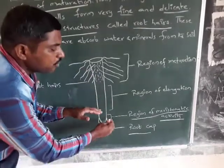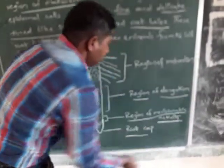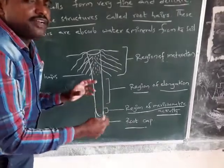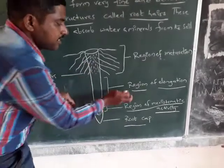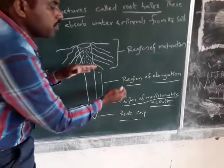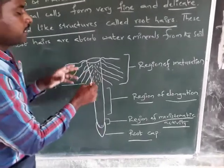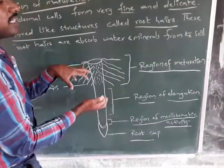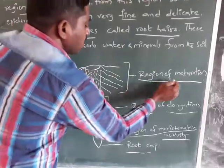Above the region of meristematic tissue, proximal to it, is the region of elongation. Here, the cells undergo rapid elongation and enlargement, which increases the length of the root. Some cells of the elongation region then undergo maturation, giving rise to the region of maturation.